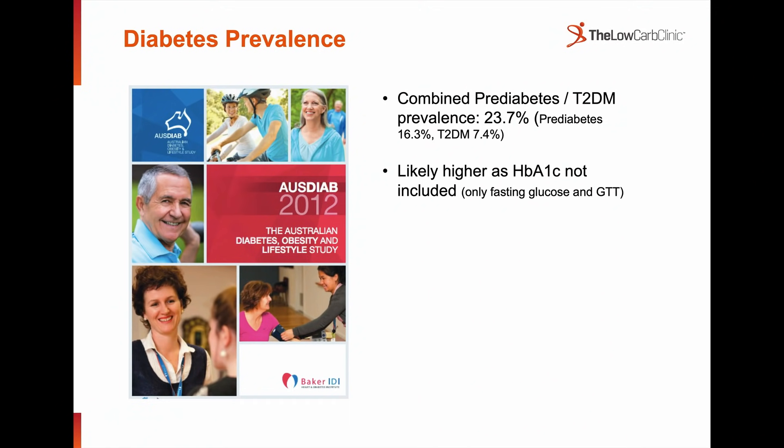Starting off with the problem — this is a massively growing issue. In terms of prevalence, 2012 Australian data showed a combined pre-diabetes and diabetes prevalence of 23.7% of the adult population. That's about a quarter of all adults, and it's likely much higher because this data didn't include HbA1c as a diagnostic criteria — only fasting glucose or an abnormal glucose tolerance test. There are three ways we can diagnose diabetes: fasting glucose, glucose tolerance, or HbA1c.